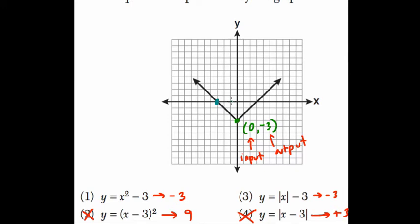Here, this point is negative 3, 0. Okay? So if we plug in negative 3 here, we should get 0. But we don't, because negative 3 squared is 9 minus 3 gives you 6. That can't be it.